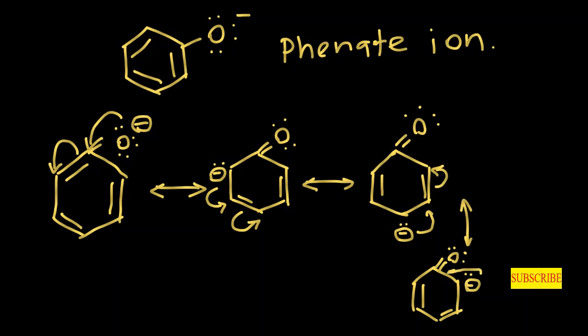As the final resonance structure, the lone pair of electrons jumps onto the very next carbon and the pi bond between the carbon and oxygen is broken onto the oxygen atom, because the electronegativity of oxygen is higher than carbon. Our last resonance structure of phenate ion should look like this.